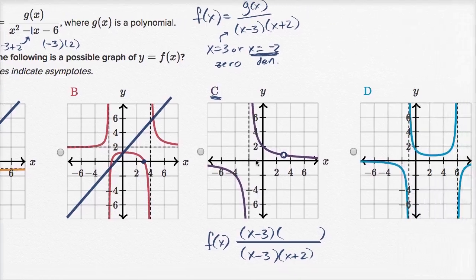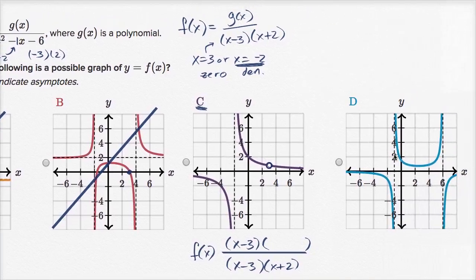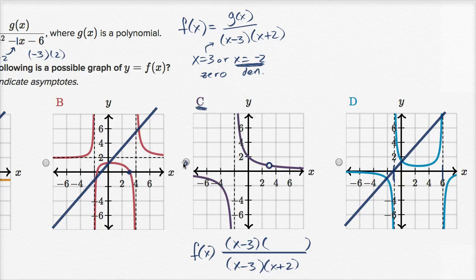Choice D has two vertical asymptotes: one at x equals negative one and one at x equals six. Neither of those coincide with the values that make our denominator equal zero. So we can rule this out as well, and we can feel really good about choice C.